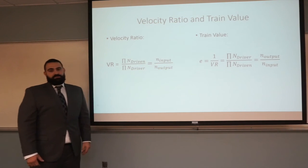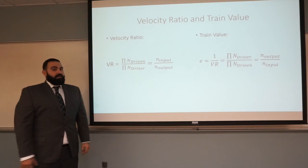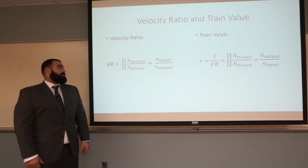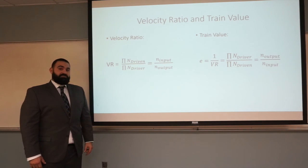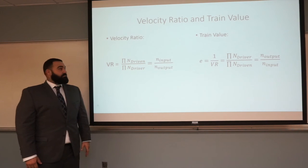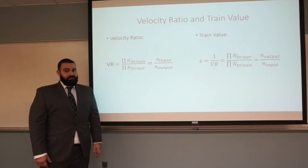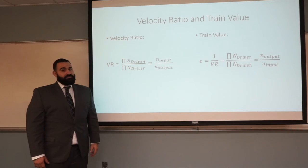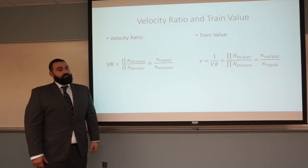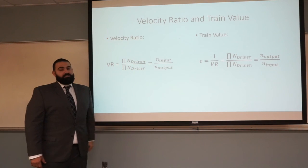The velocity ratio is a relation between the input and output velocities, and it can be calculated by multiplying the number of teeth of the driven gears and dividing that by the multiplication of the number of the driving gears. Alternatively, you can use the velocity of the input divided by the velocity of the output. Another common term is the train velocity, which is basically just the reciprocal of the velocity ratio.